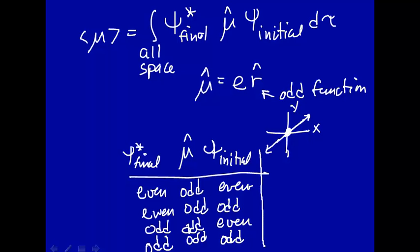And this would be odd. Now if we multiply these together, the product here will be odd, the product here will be even, the product here will be even, and the product here will be odd.